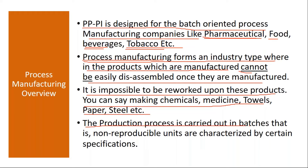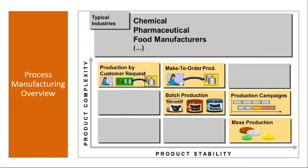The production process is carried out in batches — non-reproducible units — characterized by certain specifications. Normally here they will use batch management. What batch management is and how it is used will be covered in a separate session extensively. Process manufacturing is normally used in chemical, pharmaceutical, and food manufacturing industries. You can do make-to-order production, batch production — you have all the options in process manufacturing.